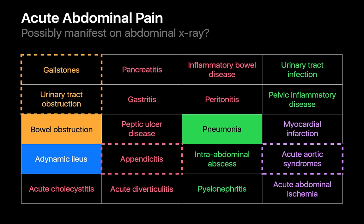When we read abdominal films for a patient with acute abdominal pain, we have a realistic opportunity to identify a bowel obstruction, adynamic ileus, or basilar pneumonia. Although abdominal x-rays will be much less sensitive and specific for diagnosing gallstones, urinary tract obstruction, appendicitis, and acute aortic syndromes, they can provide some of the evidence used to build a case for the workup and diagnosis of these conditions.